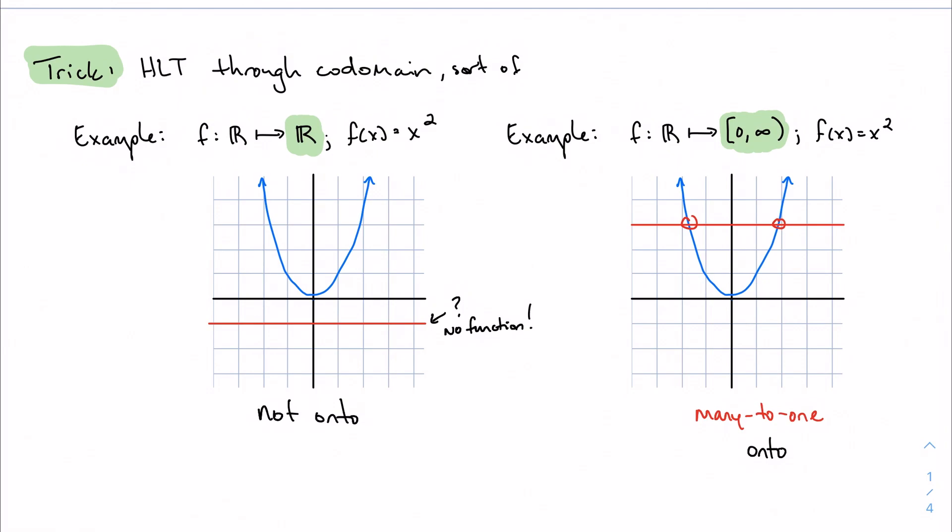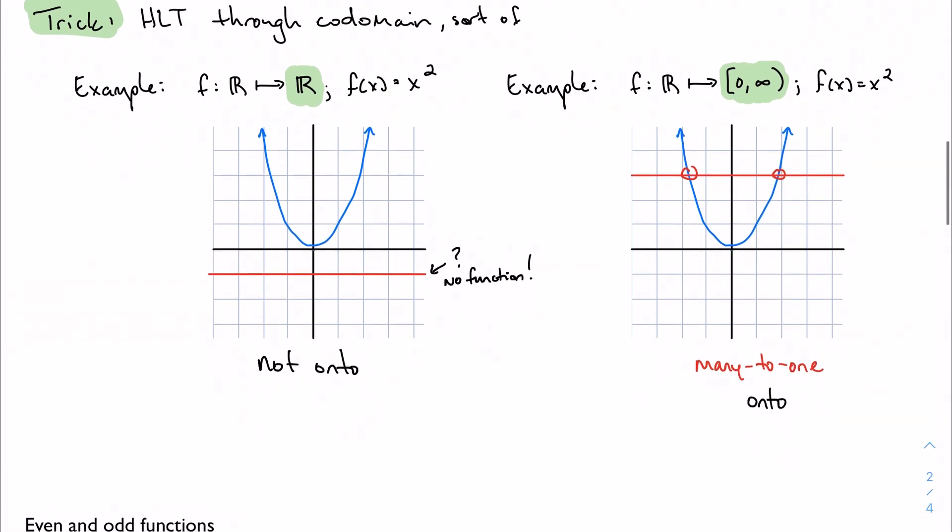We're going to pass the horizontal line test through the codomain. If I wanted to make this first example onto, all I would have to do is restrict the codomain so that it's equal to the range. You see that now that my codomain is equal to the range of this function, my function becomes onto.